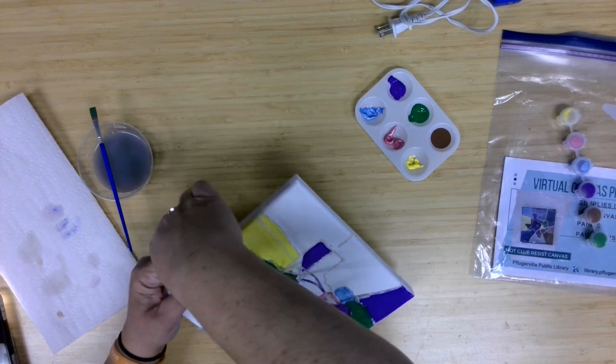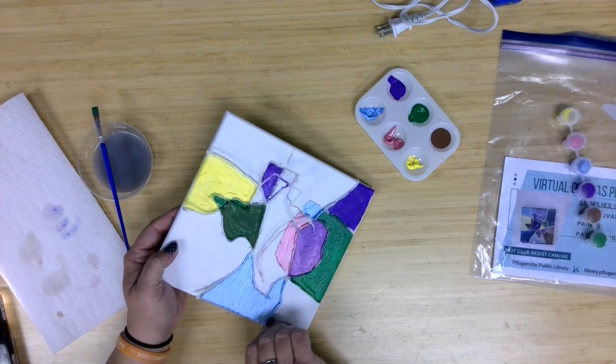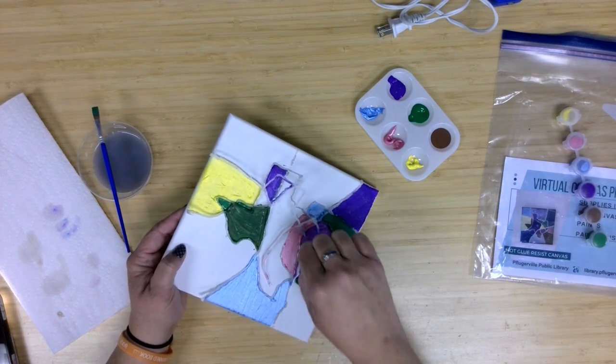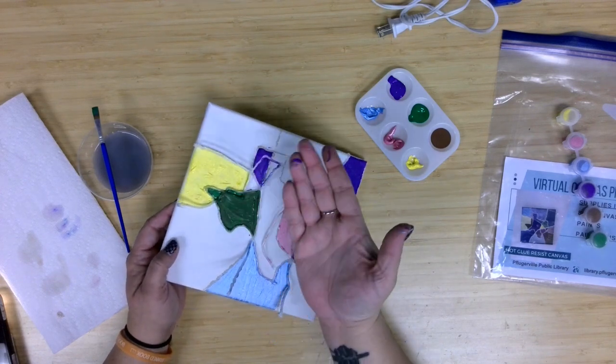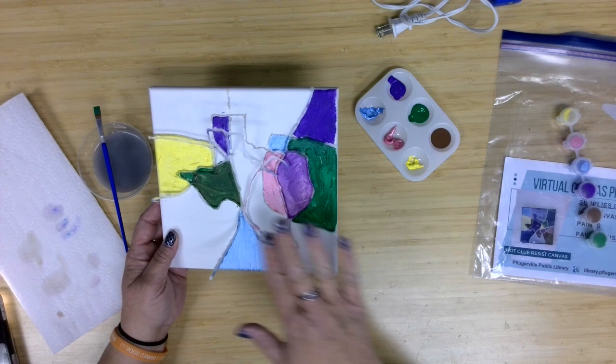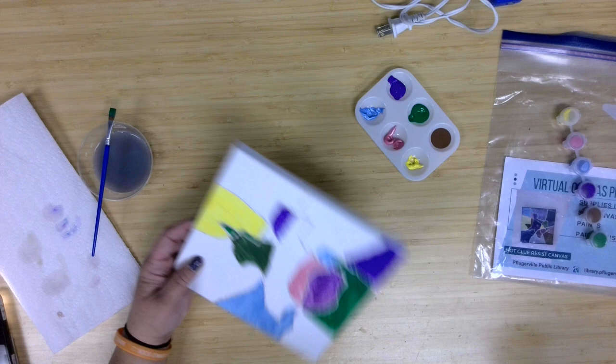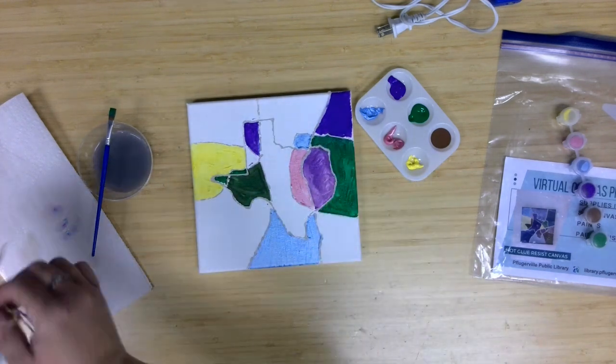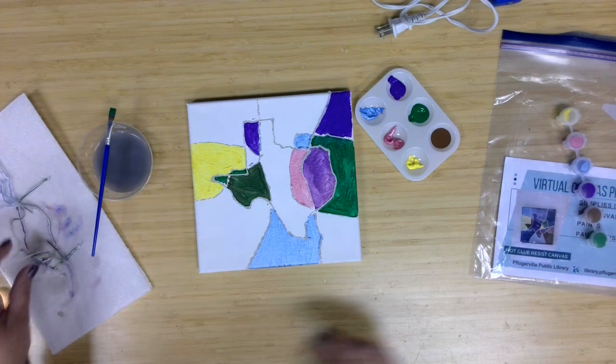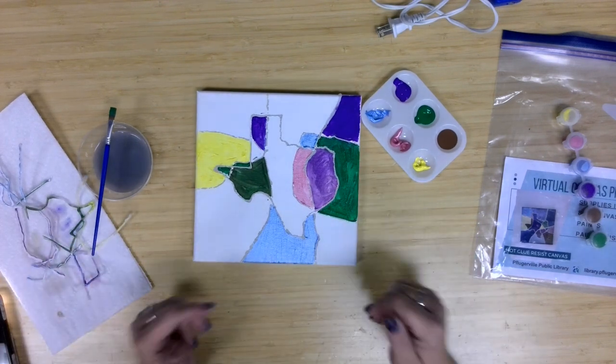You can also start from the other side, pull all your little edge pieces up at the same time and kind of work towards the middle. However works for your project. You can see I'm already getting paint on my hands because I didn't wait for the paint to dry. There we get our hot glue resist. Something like this, you can just go ahead and throw away, and then display your canvas project however you'd like.